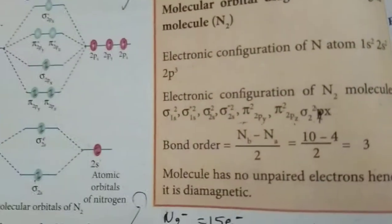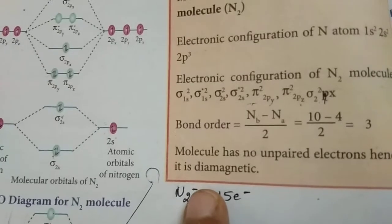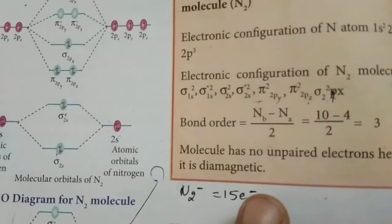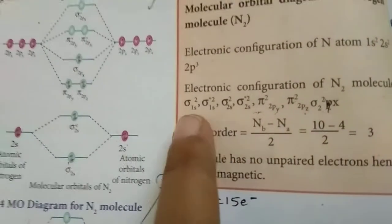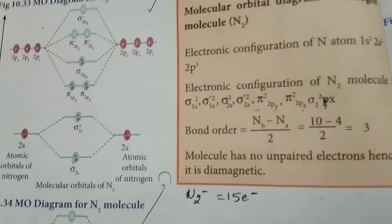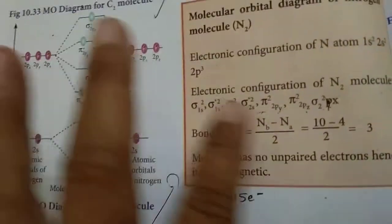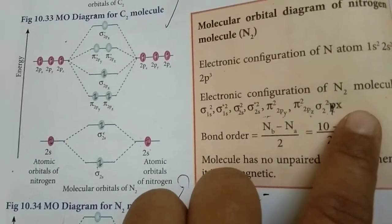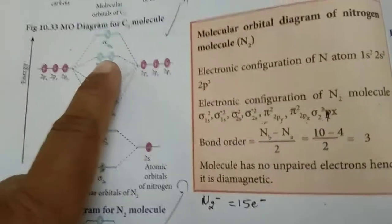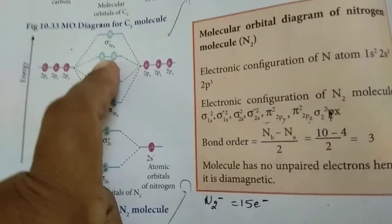For N₂⁻ ion, it has one extra electron compared to N₂, so the total number of electrons is 15. Since 15 is greater than 14, we use the second electronic configuration type. The extra electron goes into the π*2px orbital, giving it 1 electron. So the last occupied orbital has 1 unpaired electron, making N₂⁻ paramagnetic.